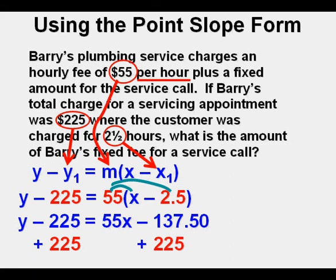Now we add 225 to both sides of the equation. Negative 225 plus 225 cancel out on the left side.